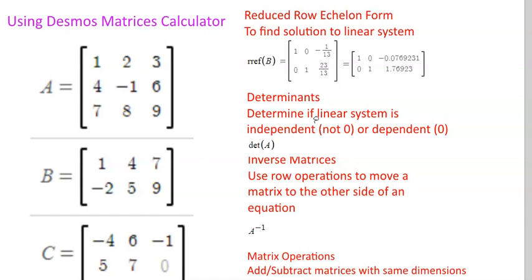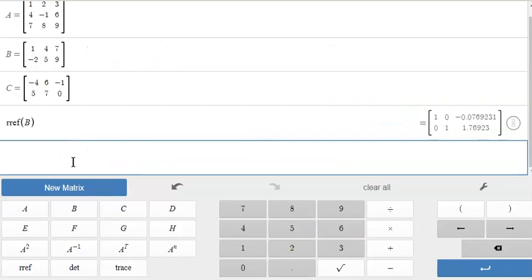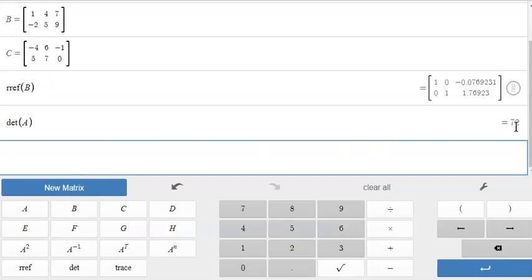Let's look at the next example. We're finding the determinant of a matrix to determine if a linear system is independent, not zero, or dependent, equals zero. To do this we go to the calculator, press DET and then A, enter. Our determinant is 72, that means that it is linearly independent.